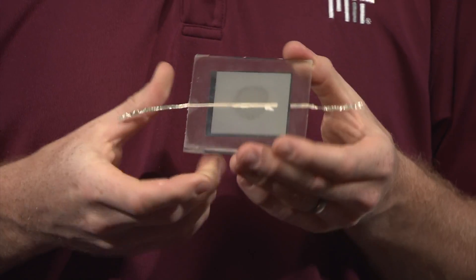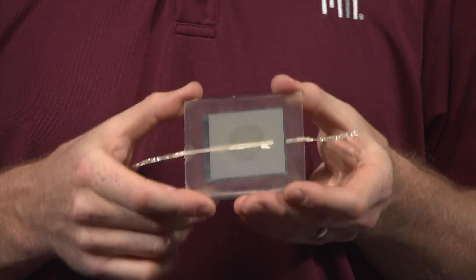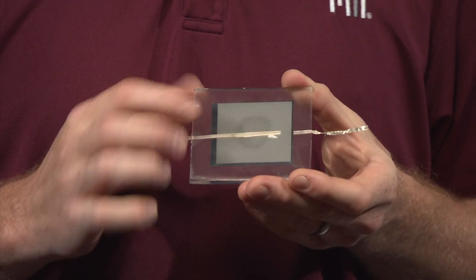If we flip over the cell, we see the entire back surface is coated with metal, which allows easy extraction of charge from the back surface. Additionally, we have another metal ribbon that's connected to the backside.